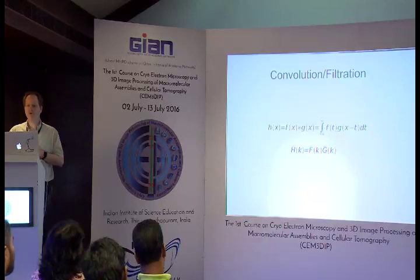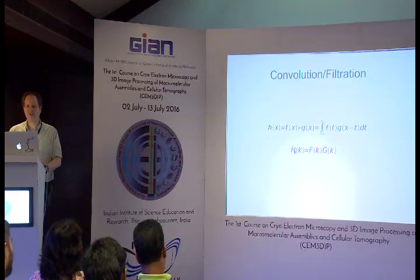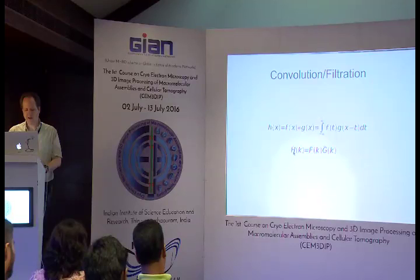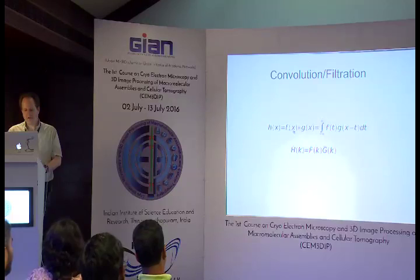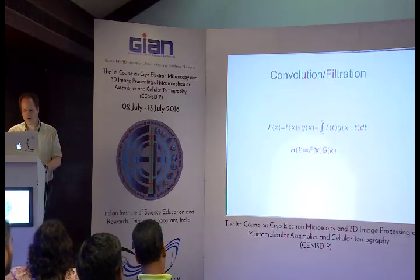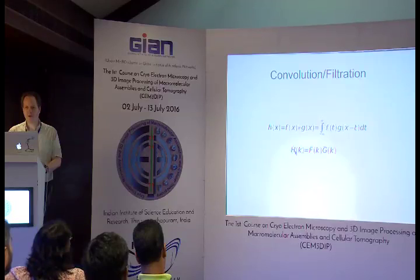It turns out that a convolution operation in Fourier space is just a multiplication. When capital letters with a bar over the top are used, that's the Fourier transform of the function. So h of x is the real space function, and capital H of k is the Fourier transform. In real space, this indicates convolution; in Fourier space, all you do is multiply the Fourier transform of one function by the Fourier transform of the other, and that gives you the Fourier transform of the convolution.